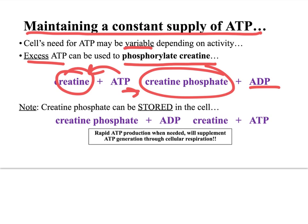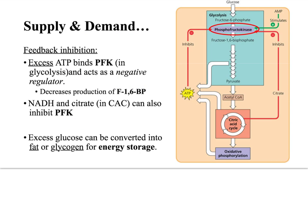Creatine phosphate is handy because it's pretty stable and can be stored within the cell. If you have an increased need for ATP, you can take that creatine phosphate and phosphorylate ADP to form ATP without having to go through cellular respiration. Creatine phosphate can supplement ATP generated through cellular respiration in high-demand situations.